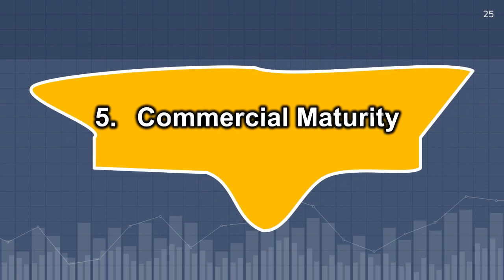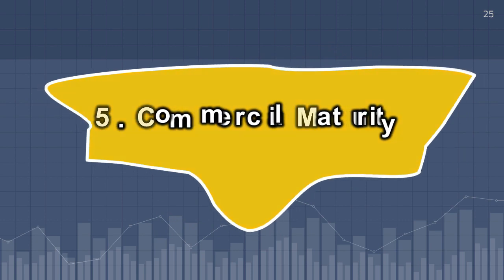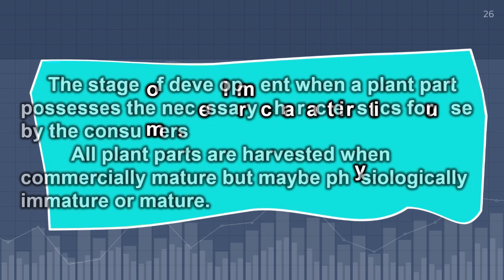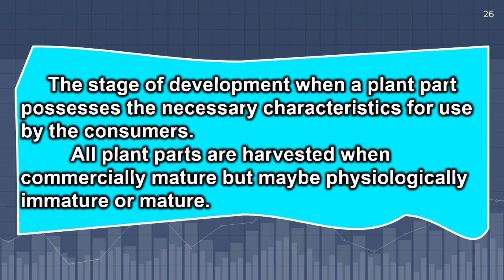Commercial maturity: This refers to the stage of development when a plant part possesses the necessary characteristics for use by consumers. All plant parts are harvested when commercially mature, but may be physiologically immature or mature.